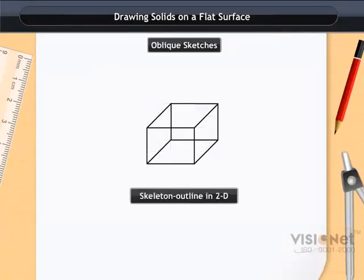Here we can see that all line segments are not equal in measurement. Yet they seem to be equal in the figure and we can easily recognize it as a cube. These sketches are known as Oblique Sketches.